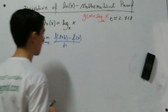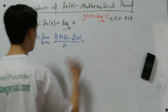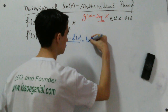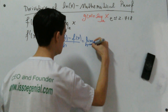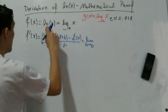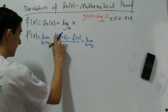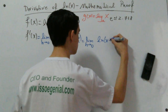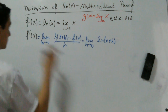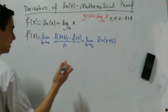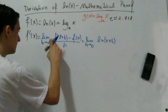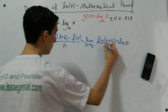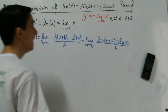f prime of x can be written as the limit where h approaches 0 of f of x plus h minus f of x, all divided by h. This is the limit definition of a derivative. So f of x is natural log of x. This equals the limit when h approaches 0 of natural log of x plus h minus natural log of x, all divided by h.